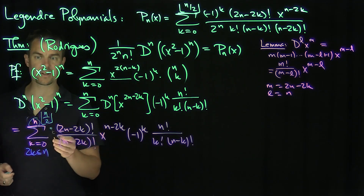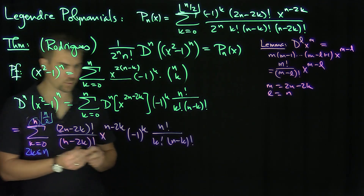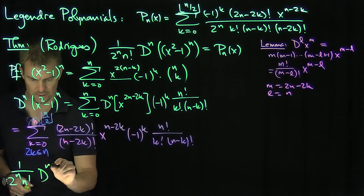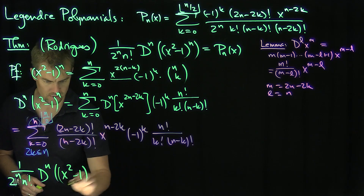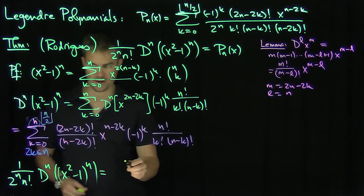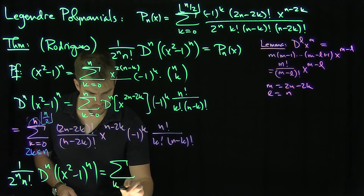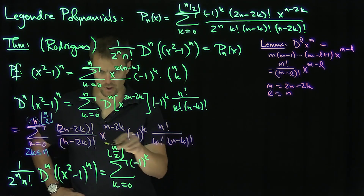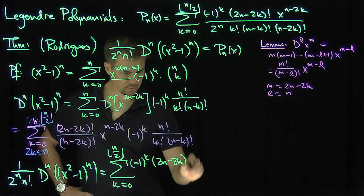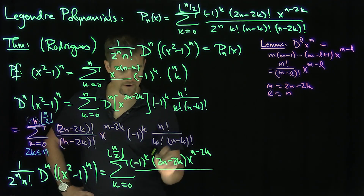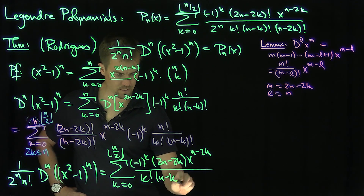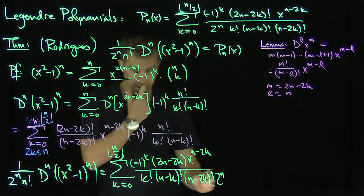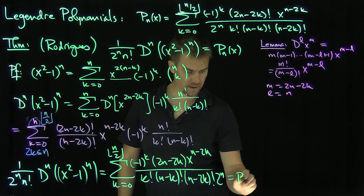Therefore, dividing by 2 to the n and n factorial, we get that 1 over 2 to the n, n factorial, times d to the n of x squared minus 1 to the power n equals the sum k from 0 to the floor of n over 2, of negative 1 to the k, times 2n minus 2k factorial, times x to the n minus 2k, over 2 to the power n, k factorial, n minus k factorial, n minus 2k factorial. Looking at this, we see it is exactly equal to the Legendre polynomial Pn of x. Beautiful — that proves the Rodriguez formula.